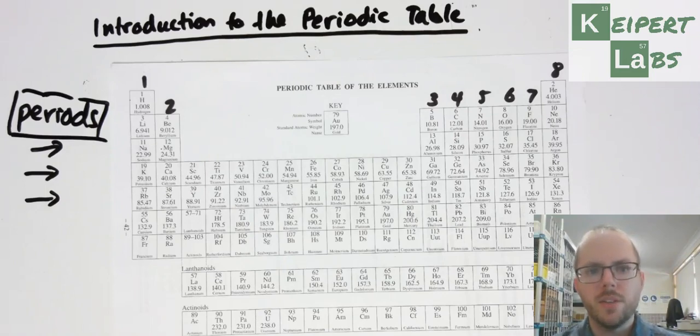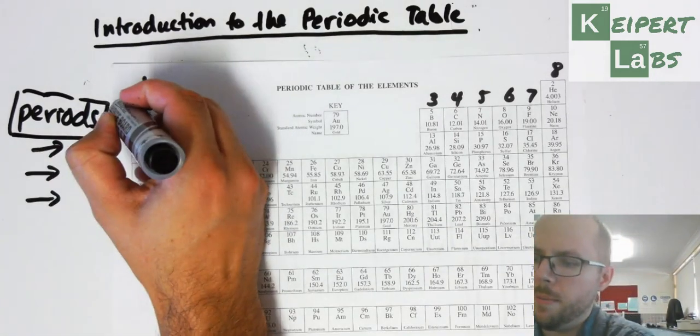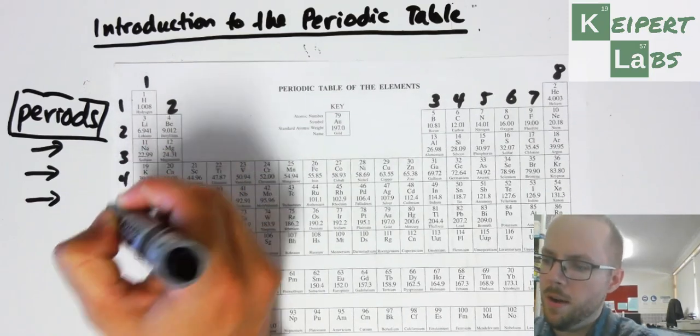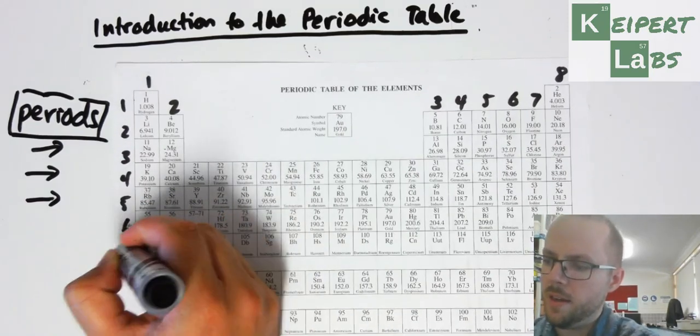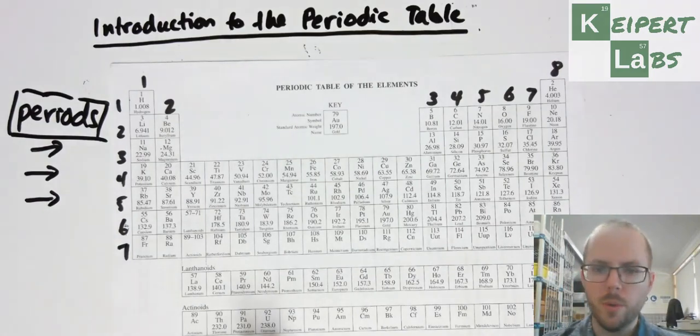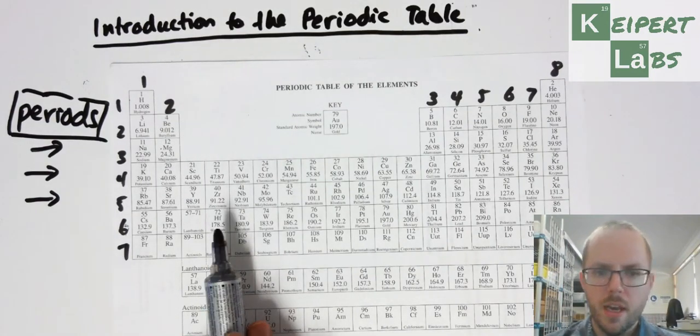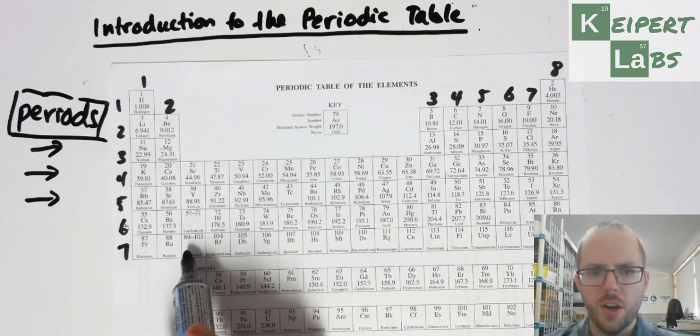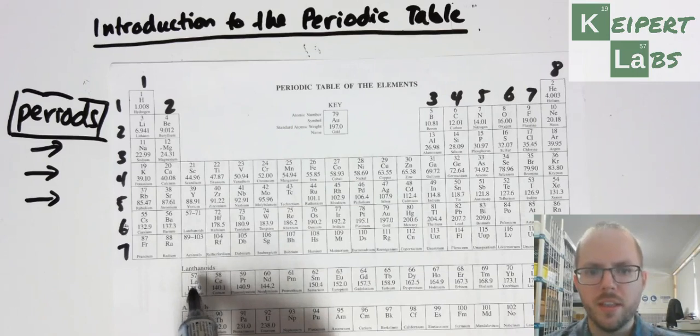Same sort of thing - we give them numbers as well: one, two, three, four, five, six, and seven. Now I'm not numbering the ones down the bottom because if you have a little bit of a look at this example, you see this box says 57 to 71, this box says 89 to 103.